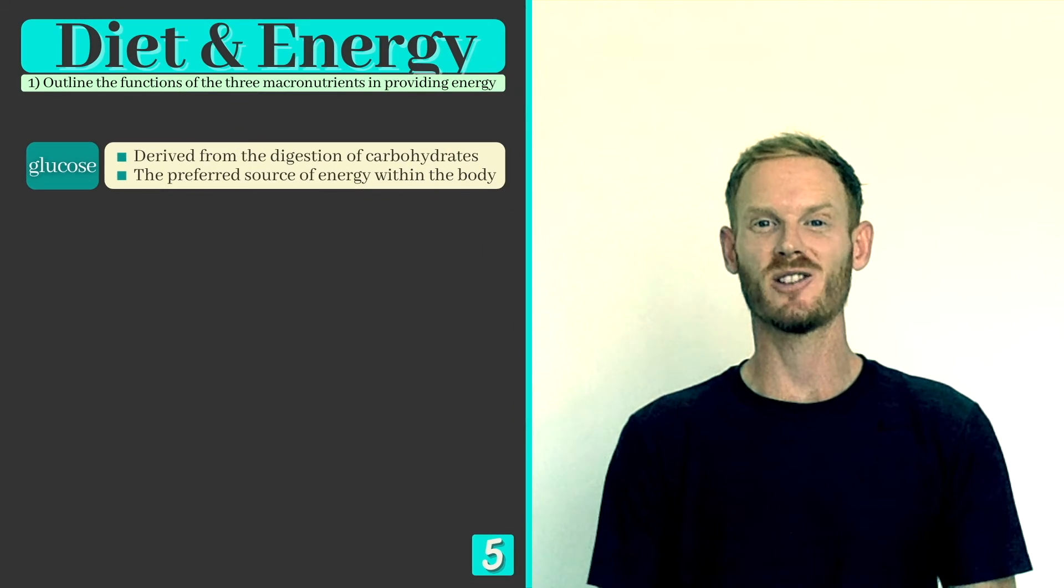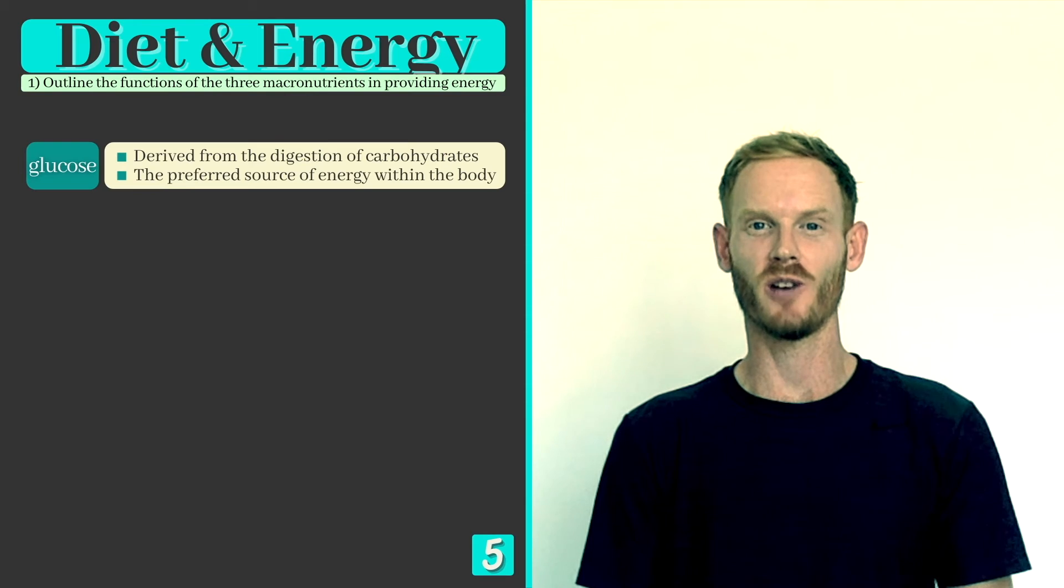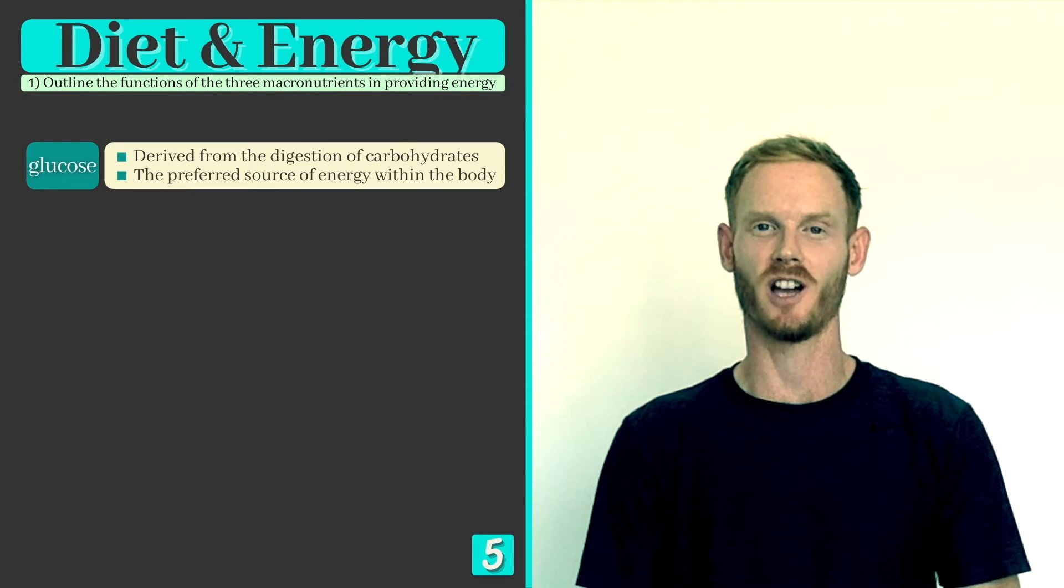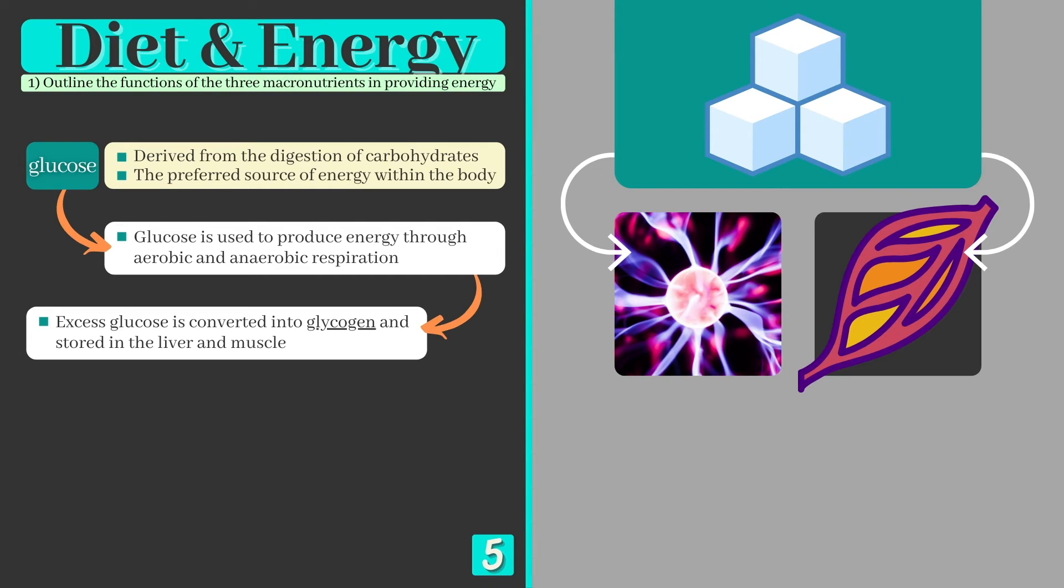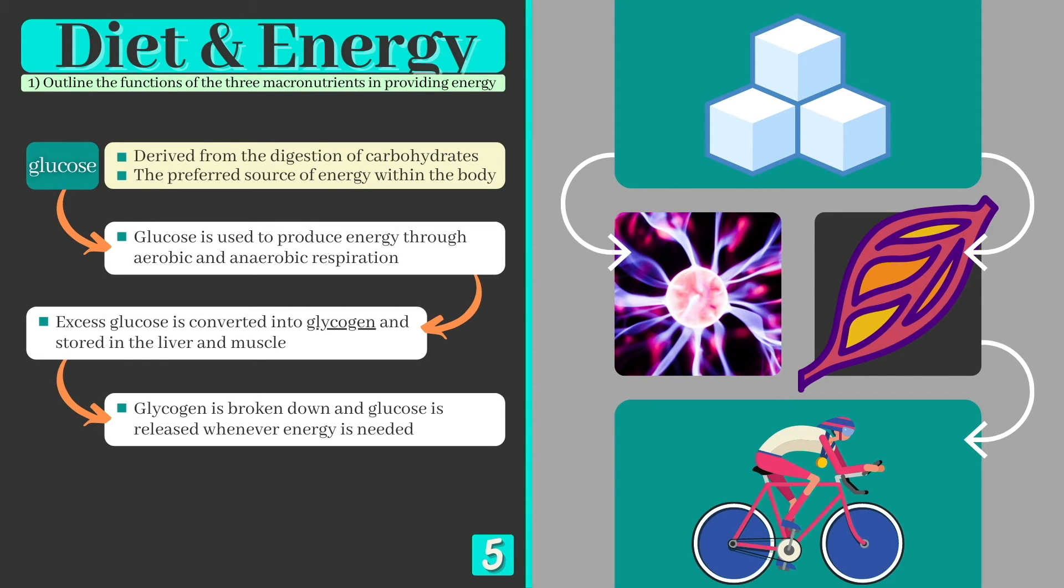You know by now that the main source of energy within the body is glucose which comes from the digestion of carbohydrates. Glucose can be used to produce energy through aerobic and anaerobic respiration but any that isn't immediately used is stored in the liver and muscle cells in a form known as glycogen. This glycogen can then be broken down and released when energy demands go up meaning athletes have a consistent supply to call upon.